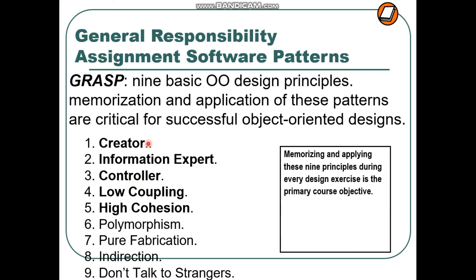The first five patterns are: Creator, Information Expert, Controller, Low Coupling, and High Cohesion. Polymorphism, Pure Fabrication, Indirection, and Don't Talk to Strangers will be discussed in the next videos.